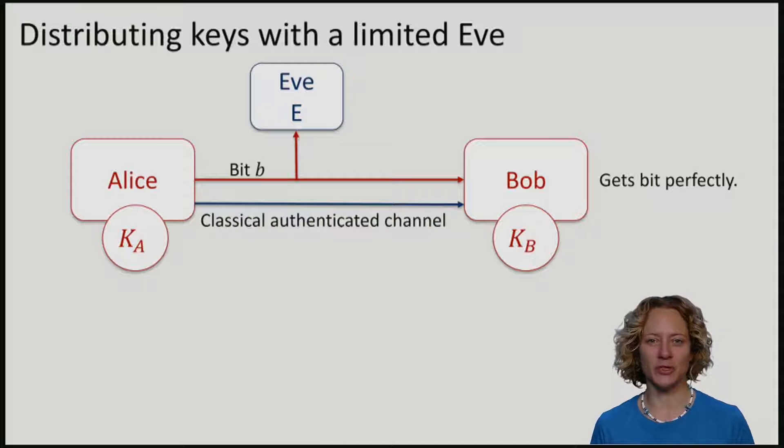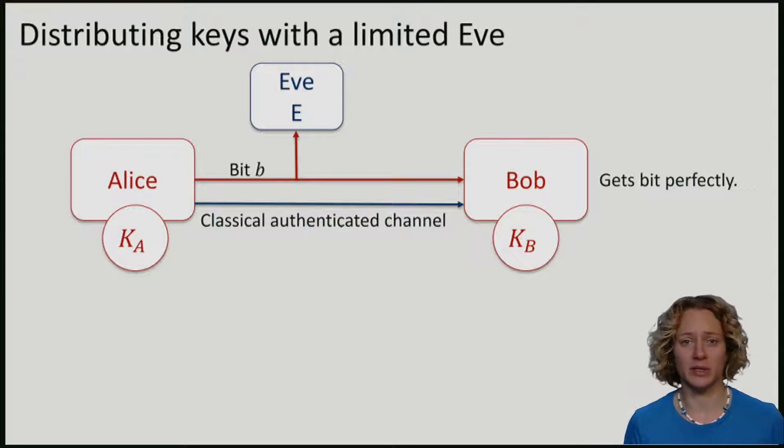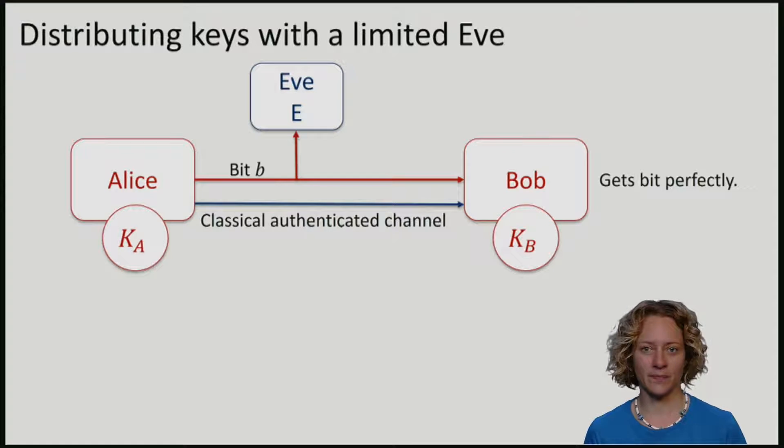To learn about key distribution, let's consider another example of a very special situation. This time, the channel has the property that Eve actually gets all the bits. However, we will assume that Eve is limited.